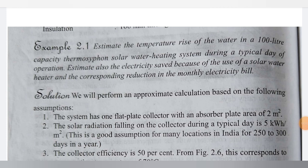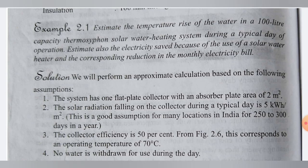Here we are going to calculate the temperature rise required for the water. The example is: estimate the temperature rise of the water in a 100-liter capacity thermosyphon solar water heating system during a typical day of operation. Also estimate the electrical savings because of the use of the solar water heater and the corresponding reduction in the monthly electrical bill.